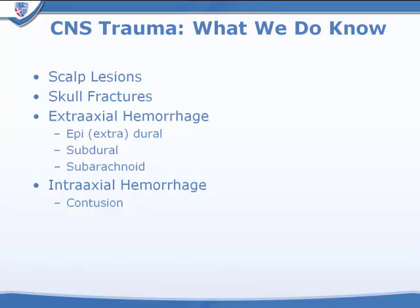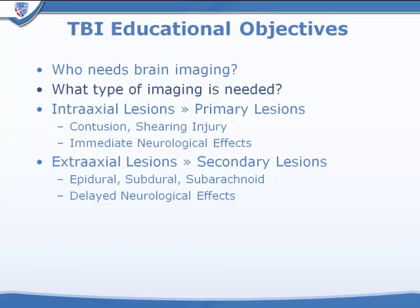What we do know about TBI includes scalp lesions visible on the outside, skull fractures seen on skull films and easily on CT, extra-axial hemorrhage and hematomas in the epidural space, subdural space, and subarachnoid hemorrhage, and intra-axial hemorrhage — brain bruising or cerebral contusions.